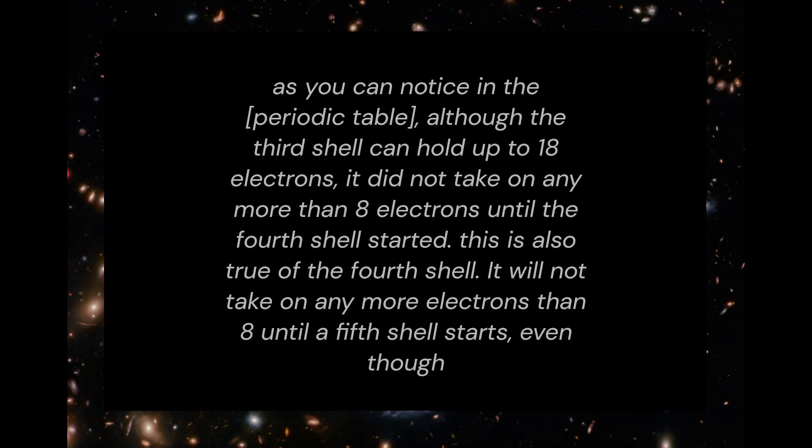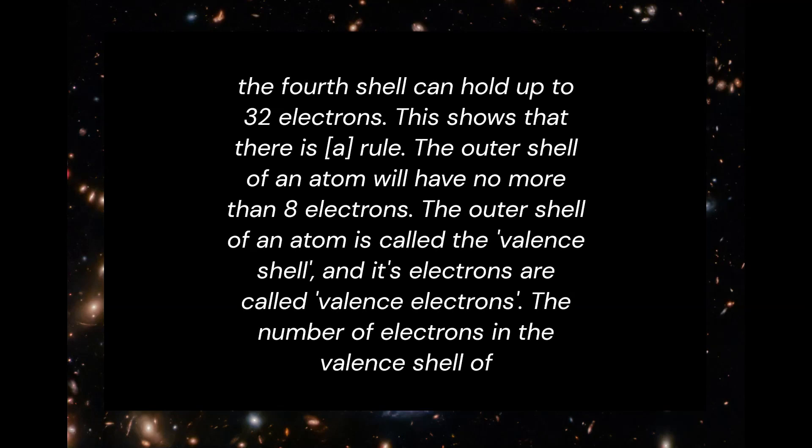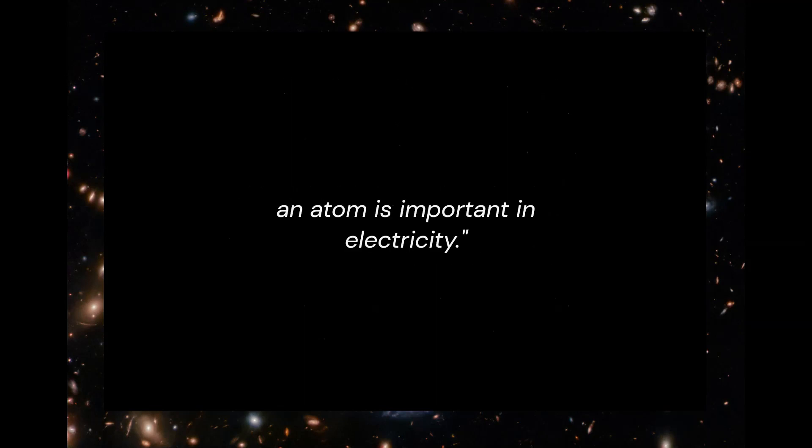As you can notice in the periodic table, although the third shell can hold up to 18 electrons, it did not take on any more than eight electrons until the fourth shell started. This is also true of the fourth shell. It will not take on any more electrons than eight until the fifth shell starts, even though the fourth shell can hold up to 32 electrons. This shows that there is a rule. The outer shell of an atom will have no more than eight electrons. The outer shell of an atom is called the valence shell, and its electrons are called valence electrons. The number of electrons in the valence shell of an atom is important in electricity. End quote.